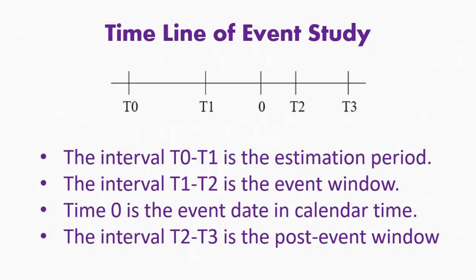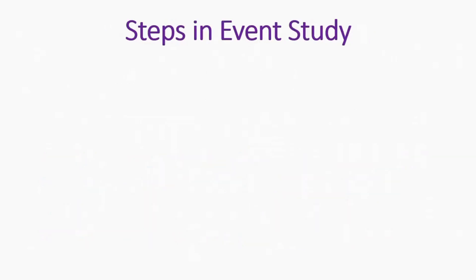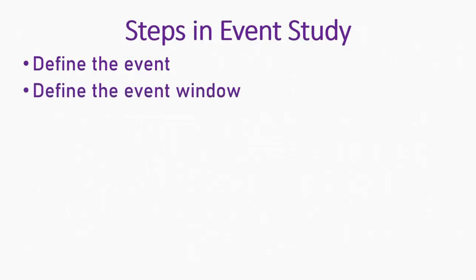The estimation period is used to understand the normal behavior of the stock before the particular event. The event window helps us assess whether the news impacted stock prices, whether there was any leakage of the news prior to the event, and whether the event impacted prices only after it occurred. So we should define the timeline properly. Now, what are the steps to conduct an event study analysis?